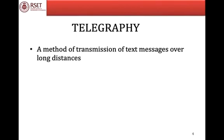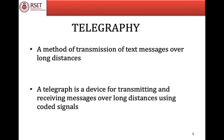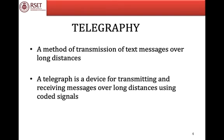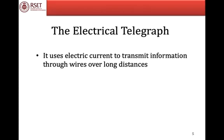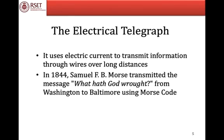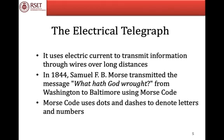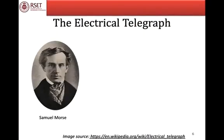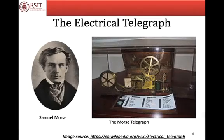Telegraphy is a method of transmission of text messages over long distances. We use a device called telegraph for transmitting and receiving messages over long distances using coded signals. The electrical telegraph uses electric current for transmitting messages through wires over long distances. In 1844, Samuel F.B. Morse transmitted the message 'What hath God wrought' from Washington to Baltimore using Morse code. The Morse code uses dots and dashes to denote letters and numbers. Here is a picture of Samuel Morse and his Morse telegraph.